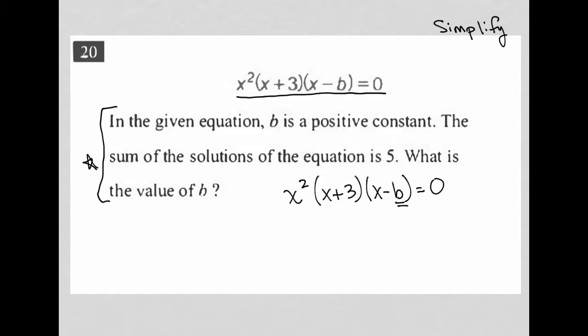So the sum of the solutions to the equation is five. Well, how do I find a solution to an equation that looks like this? Well, in essence, this is a product. It's X squared times X plus three times X minus B.